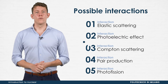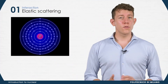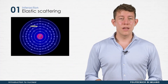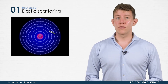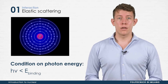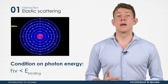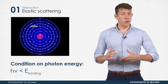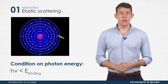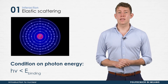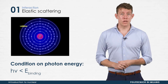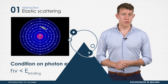Also known as coherent or classical scattering, elastic scattering is the process where the photon energy is lower than the binding energy of the electron in the atomic shells. Therefore, no energy will be transferred. Even though this event can happen during gamma or x-ray applications, it is usually ignored.